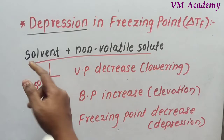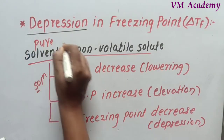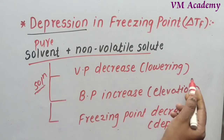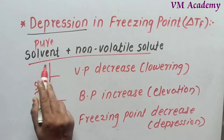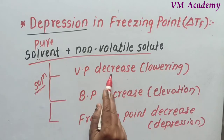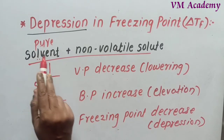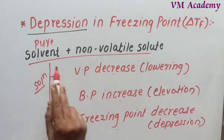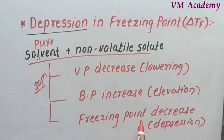These are the three effects of adding non-volatile solute to pure solvent. For pure solvent, vapor pressure was higher; for the solution, it decreased. For pure solvent, the boiling point was lower; for the solution, it increased. For pure solvent, the freezing point was higher; for the solution, it decreased.